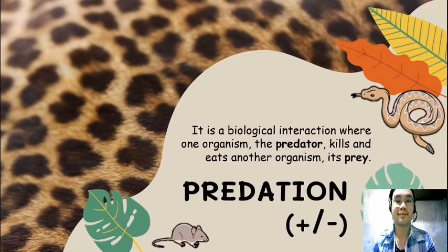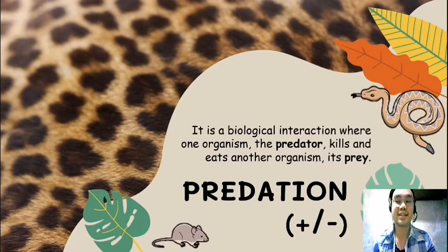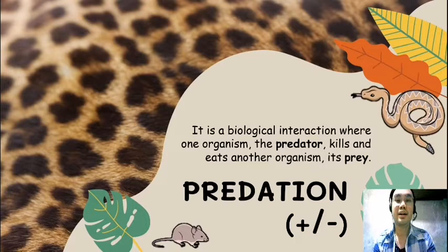First, we have predation. Predation is a biological interaction where one organism — the predator — kills and eats another organism, which is its prey. The sign we are going to use here is positive and negative, since one of them benefits from the other and another organism is being killed in this relationship.